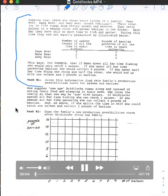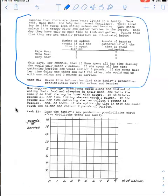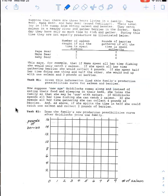So suppose that there are three bears living in a family: mama bear, papa bear, baby bear, and their total joy in life comes from eating salmon and berries. They catch salmon in a nearby river, gather the berries in the forest. Each day they have only so much time to fish and gather, and during that time they're not as equally productive as illustrated below.